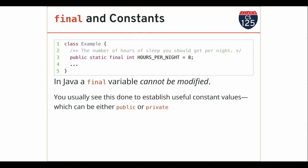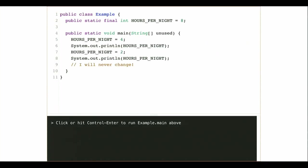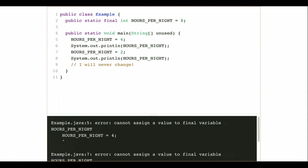If someone is reading your program and they see the number 8, they don't know what it means. If instead you replace it with a symbolic constant like HOURS_PER_NIGHT, someone reading your program has a much higher chance of understanding what's going on. It also makes it easier to change — if you use this number at multiple places and some new recommendation says you should get nine hours a night, you just change the value in one place and the rest of the program works. Once I've assigned HOURS_PER_NIGHT to be eight, I can't modify it within the program.